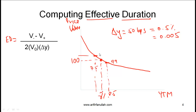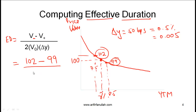Plugging into the formula: V minus means the value when we reduce the interest rate by delta Y — in our example that's 102. V plus is the value when the interest rate is increased by delta Y — in our example that's 99. So we have (102 − 99) / (2 × V₀ × ΔY), where V₀ is the original value of 100 and delta Y expressed as a decimal is 0.005. Solving this gives an effective duration of 3.